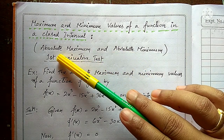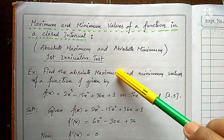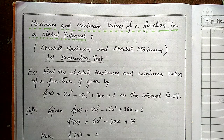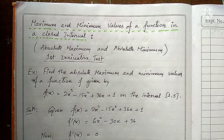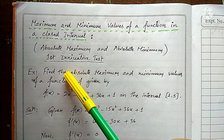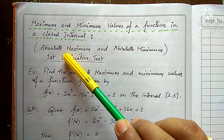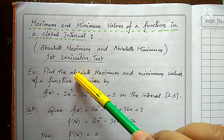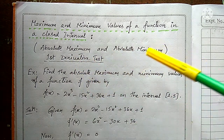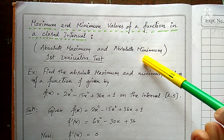Absolute maximum is also known as global maximum or greatest value. If anyone asks you to find the greatest value or global maximum, that means we have to find the absolute maximum. Similarly, absolute minimum means global minimum or least value.